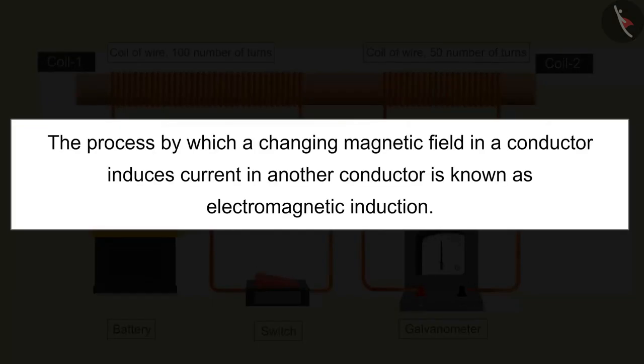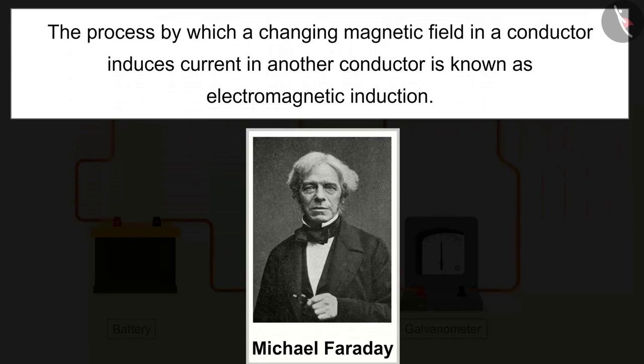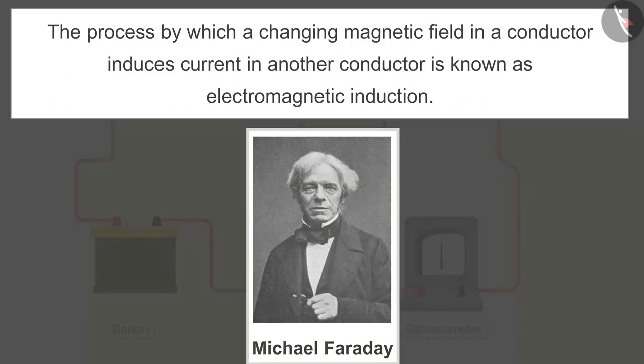The process by which a changing magnetic field in a conductor induces current in another conductor is known as electromagnetic induction. Michael Faraday experienced this for the first time in history. To find the direction of this induced current Fleming's right hand rule is being used.